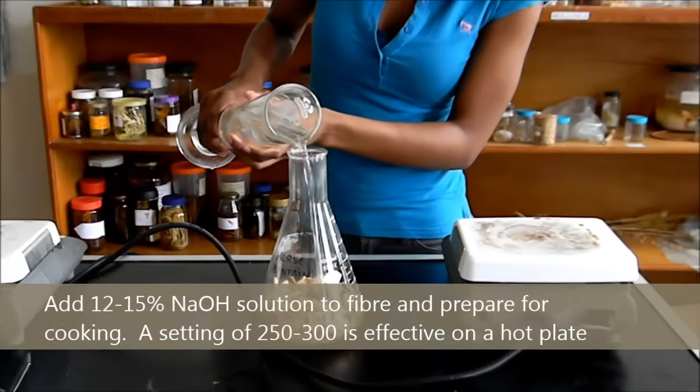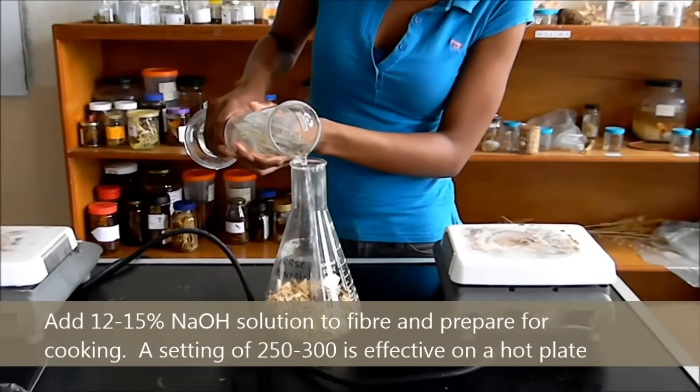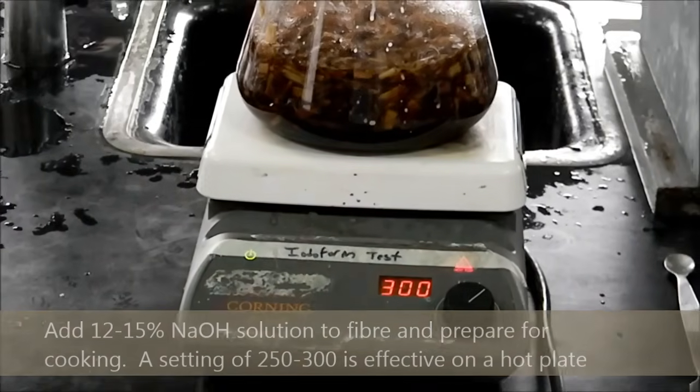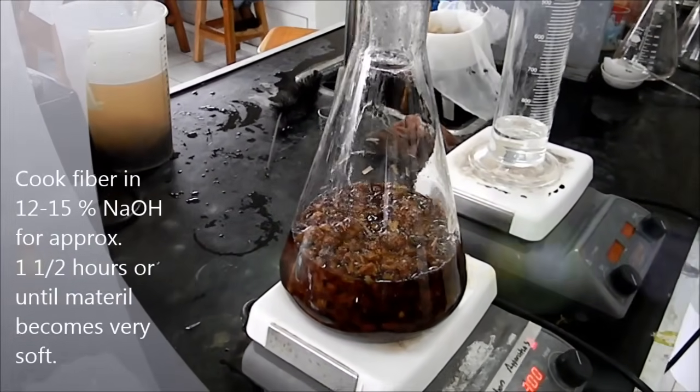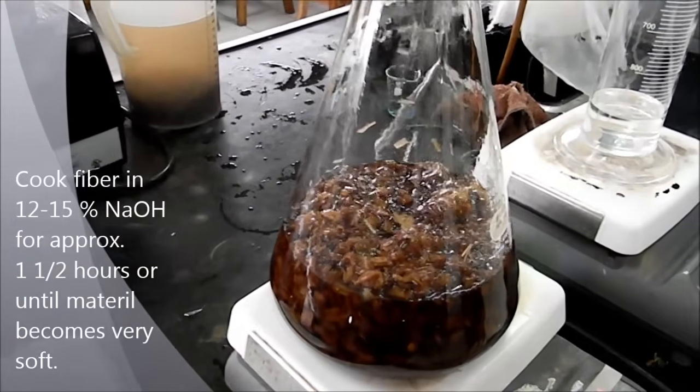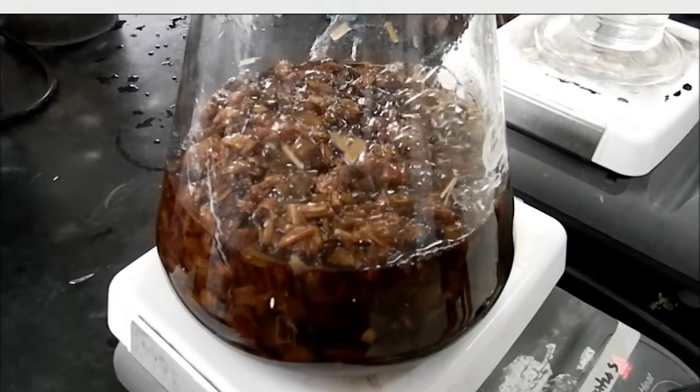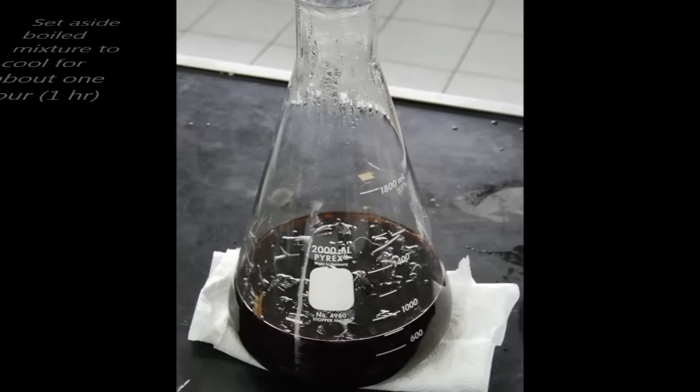You cook this fiber for approximately one and a half to two hours. Medium boil, allow it to just keep boiling. You can top it up with water as it goes along. Then you leave this to cool for about an hour or two.